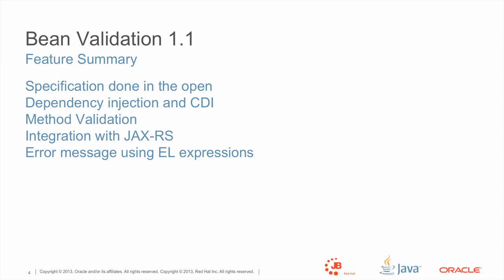We're going to talk about dependency injection and specifically about how we have integrated CDI and Bean Validation 1.1. Then we're going to talk about the big feature, which is method validation — validating parameters and return values of methods. As an extension to that, we're going to talk about how we integrated JAX-RS and used Bean Validation as the validation framework for JAX-RS. And finally, as a bonus feature, we've added much more powerful error messages using EL expressions.